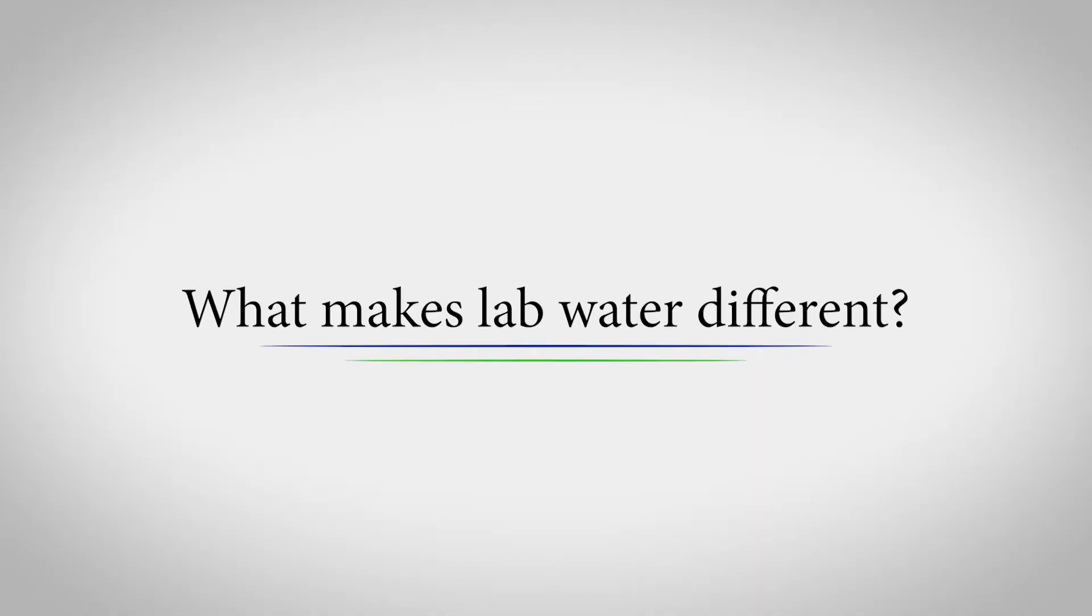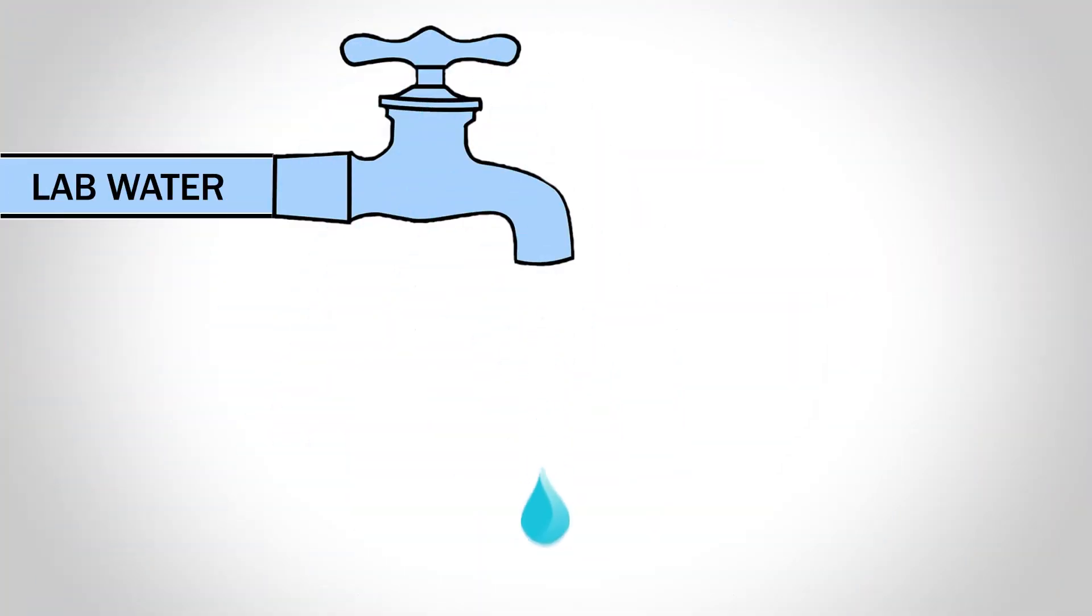But what makes lab water different from any other type of water? Put simply, lab water is incredibly pure water, like way purer than you could ever get from a Brita, or a bottle of Voss, or a distilled jug of water, or any other kind of water. If water, in its most literal sense, is H2O, two atoms of hydrogen and one atom of oxygen in every molecule, then lab water is just that, pure H2O with almost nothing else in the mix.